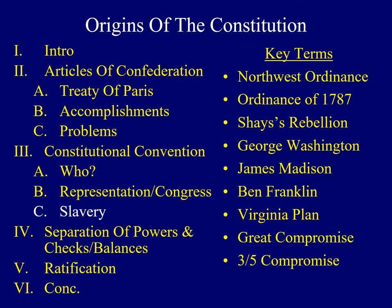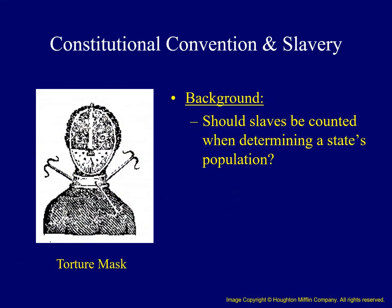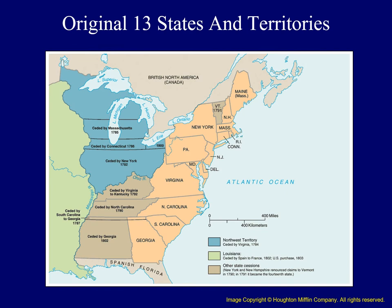The next controversy dealt with the issue of slavery and how slaves would be counted when determining each state's population. As the Constitutional Convention continued, a question was raised: should states be allowed to count slaves when determining their populations? Delegates from states with large numbers of slaves argued yes, while delegates from other states were opposed. Slavery existed in every single English colony before the American Revolution, and was more prevalent in southern states where it played a crucial role in the region's economy.